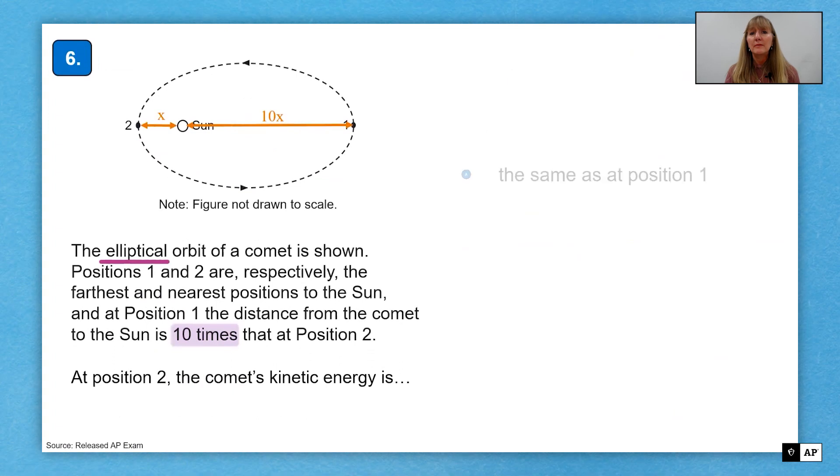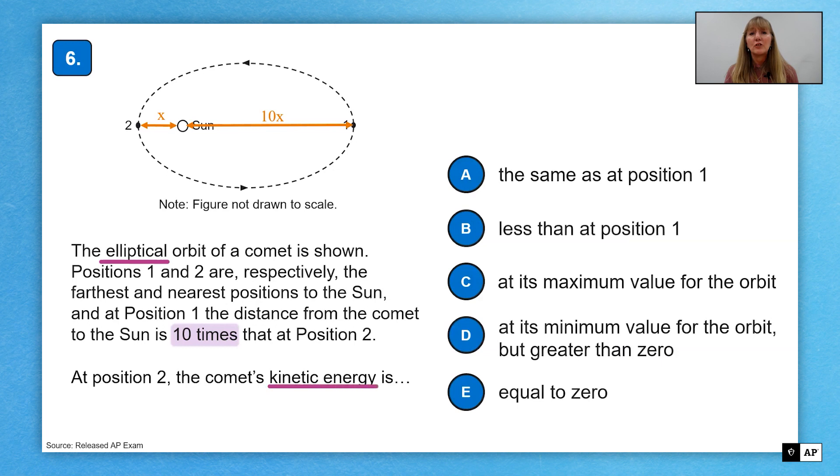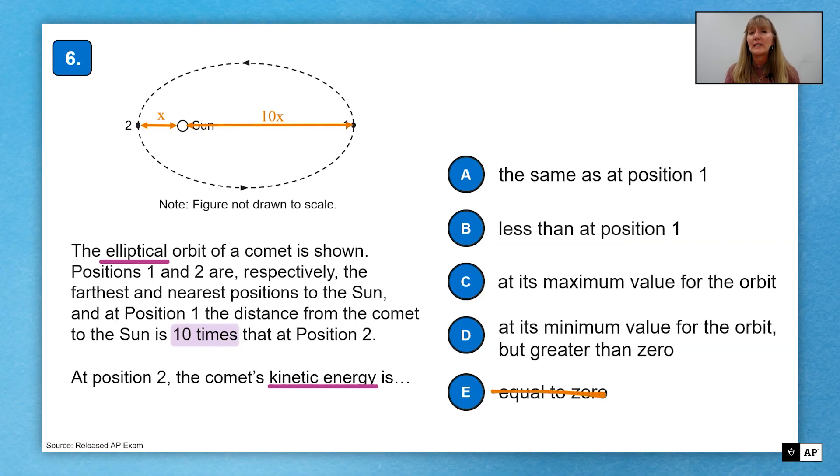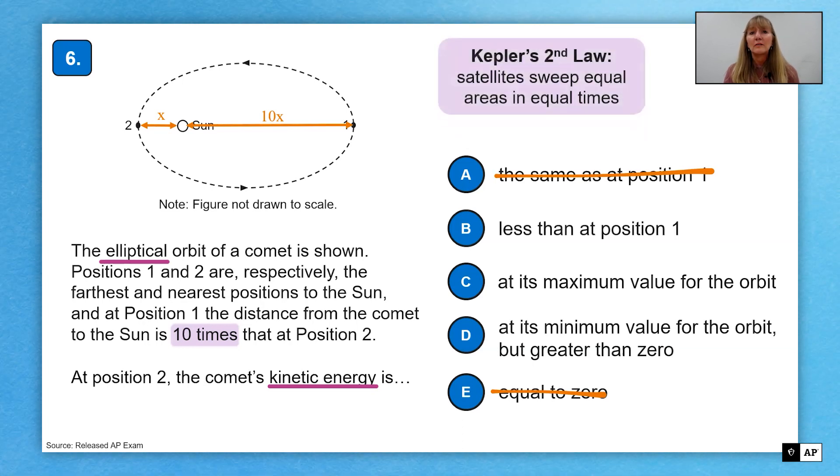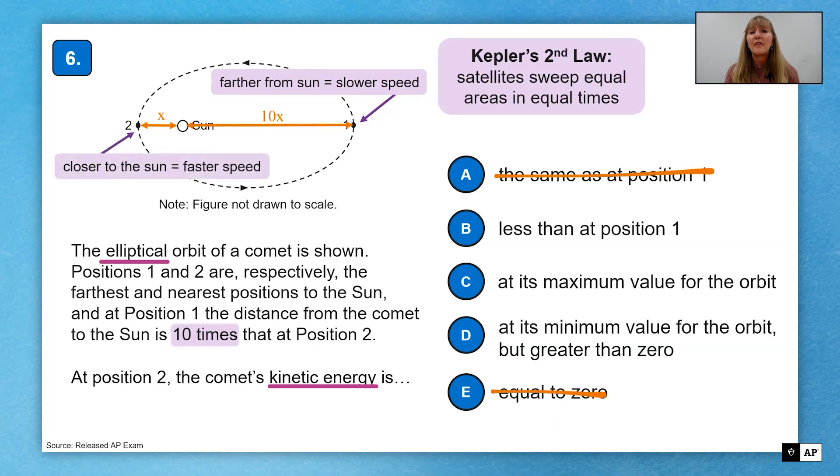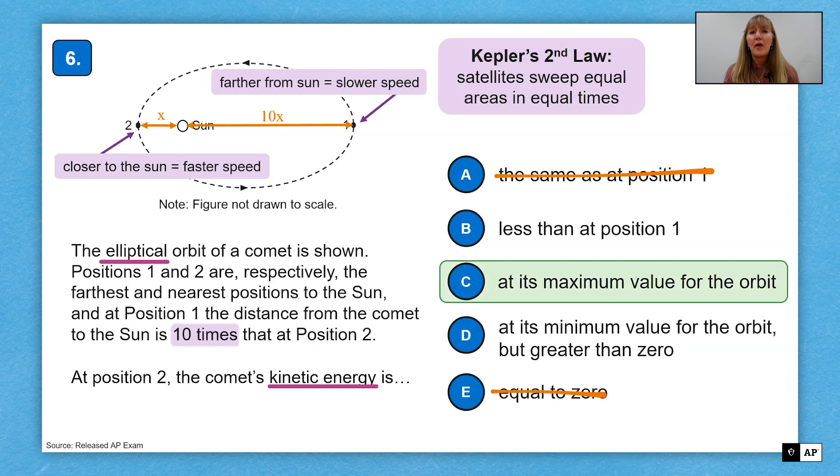Now we're going to stay with the same stem. But this time, we're going to ask a different question. Here at position 2, we're going to calculate or figure out what the comet's kinetic energy is. Well, I've already figured out that it has a velocity at position 2. So I know it can't be equal to 0. So choice E is removed. I also know there is a ratio that was not equal to 1. So the velocities can't be the same. Therefore, the kinetic energies can't be the same. So choice A is also removed. Now we're down to three choices. Kepler's second law talks about how satellites sweep equal areas in equal times as they orbit. So the farther away that the comet is, the slower it is moving. And the closer it is to the sun, the faster it is moving. So at position 2, I am the closest I will be. So I am moving the fastest. Therefore, the kinetic energy is a maximum at position 2. That is choice C.